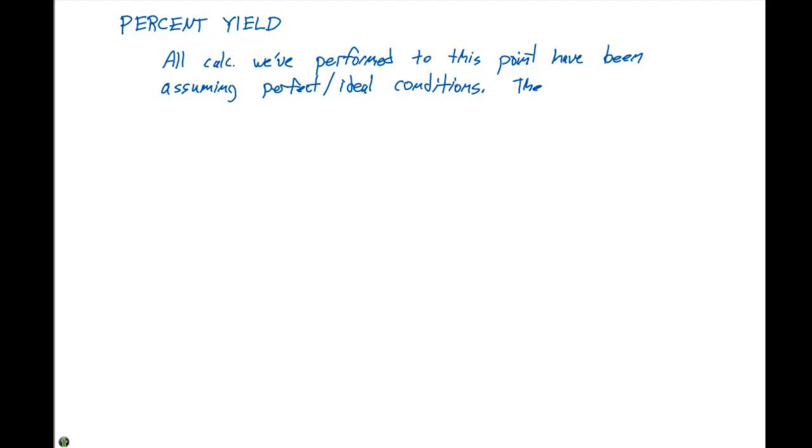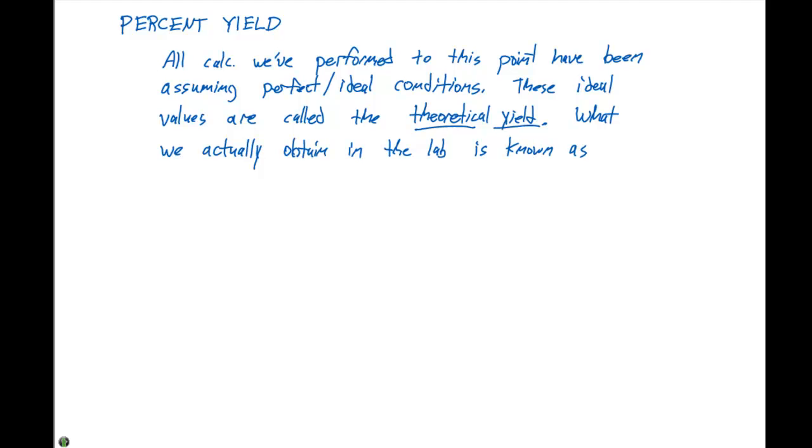These ideal values are called the theoretical yield. What we actually obtain in the lab is known as the actual yield.